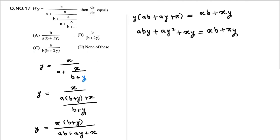Now our xy and xy cancel from both sides, which is equal to aby plus ay squared equals bx.